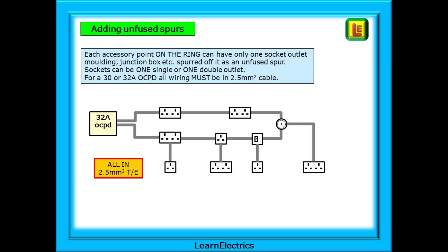When adding unfused spurs, we must follow the rules for safe functioning of the circuit. Each accessory point on the ring can have only one socket outlet molding, junction box, etc. spurred off it as an unfused spur. Sockets can be one single or one double outlet. For a 30 amp or 32 amp OCPD, all wiring must be in 2.5mm cable as shown here in grey.